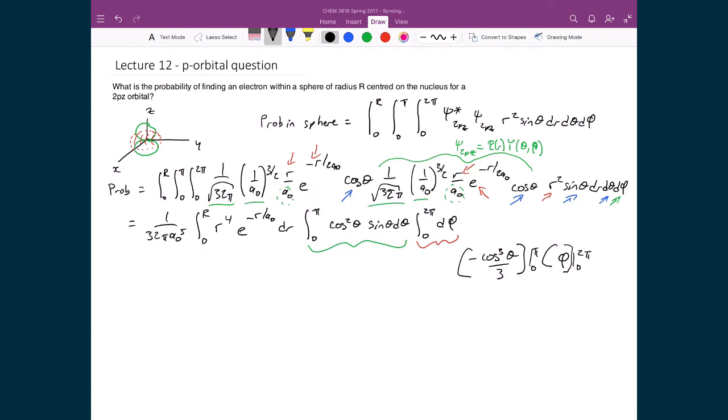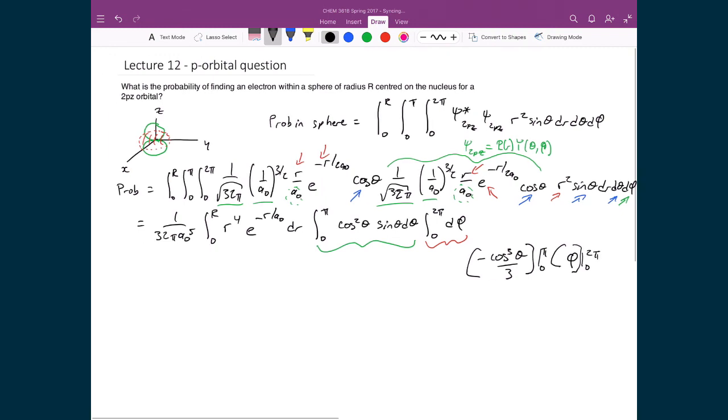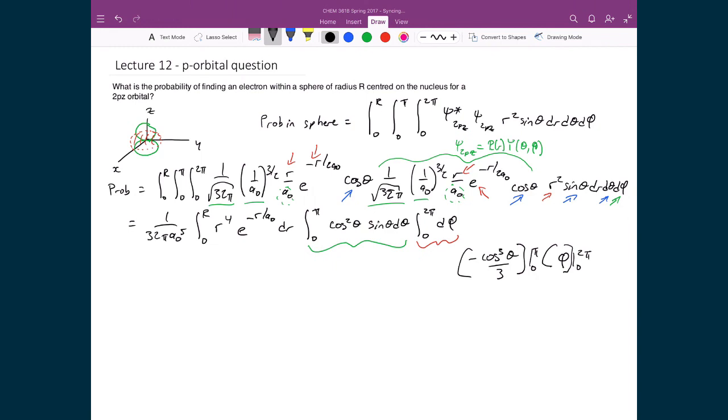If we were to take the derivative of that term, we would end up getting back cos² theta sin theta dθ. And so that's why we can right away just write in that term.